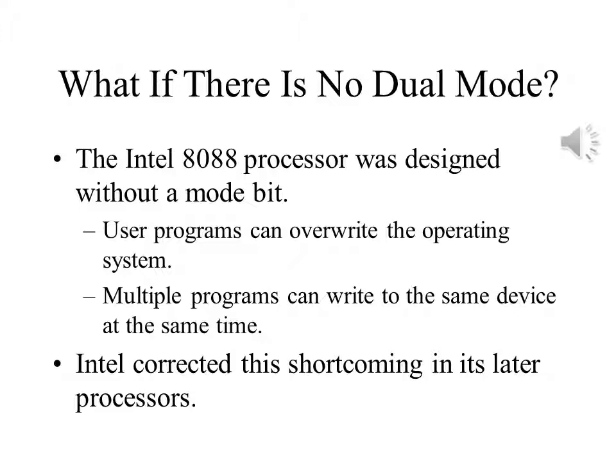What if there is no dual mode? This was the case for the early Intel processors, which were originally designed for embedded systems such as calculators. No one expected then that these devices would be used as the basis for building small computers. This was at least part of the reason why MS-DOS did not have any of the protections that we normally assume that operating systems will provide. As a result, any and all of the operating system could be overwritten, and user programs could perform input and output directly. This was not usually a good idea.